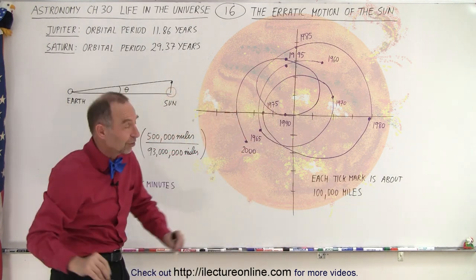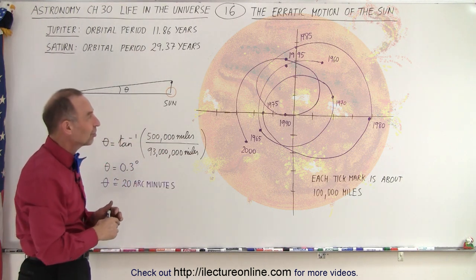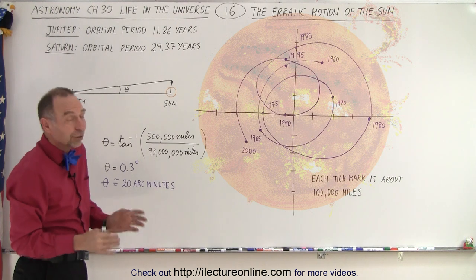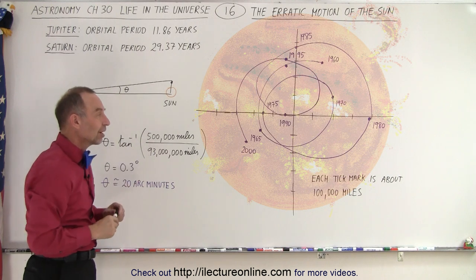And this is going to go on for billions of years. The sun is just going to bounce around based upon the mutual attraction of Jupiter, Saturn, and of course the other six planets as well. The other planets do not have as much of an effect, but they do, and so there is that mutual attraction.